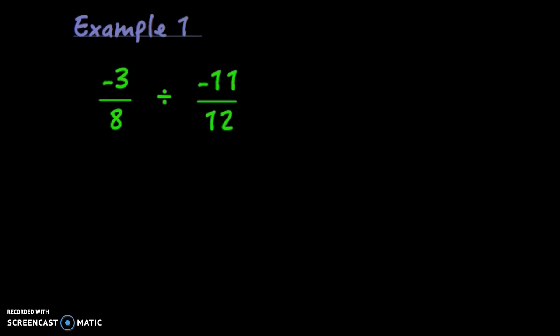We multiplied these fractions earlier, and now we're going to divide them. It's negative 3 eighths divided by negative 11 twelfths. To divide these fractions, we want to keep the first fraction the same, negative 3 eighths.